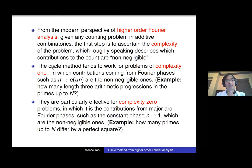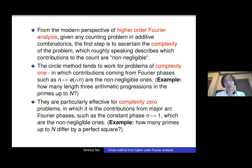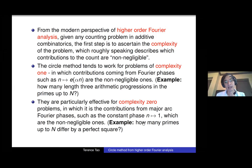The higher the complexity, the fewer terms are negligible and the more terms give important contributions, making the problem harder. The circle method is very good at tackling complexity-one questions. Complexity one roughly means that contributions from linear phases — Fourier phases like e^(2πiαn) — are the most important, and anything not correlating with a Fourier phase is negligible. Counting progressions of length three is a typical complexity-one problem.